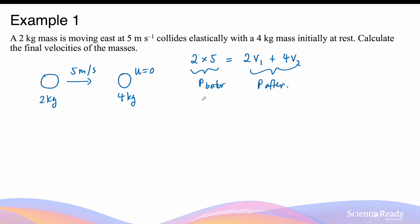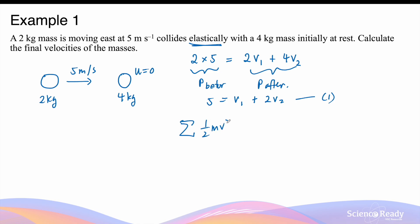We can simplify this equation to: 5 = v1 + 2v2. Let's call this our first equation. We can also apply the conservation of kinetic energy, as this is an elastic collision. So the total kinetic energy before the collision, which is ½mv², should equal the total kinetic energy of the system after, ½mv².